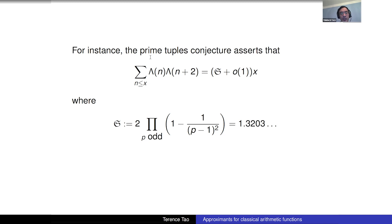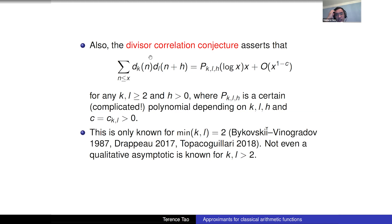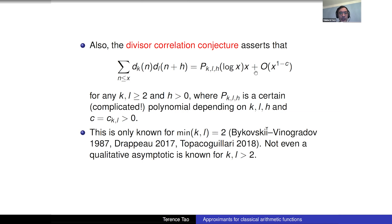For divisor functions there are also conjectures about correlations. While summing a single divisor function is classical, even pair correlations are conjectural: the sum of d_k(n)·d_l(n+h) should equal x times a certain polynomial in log x plus a lower order term with some power saving. This is known when one of k or l equals 2, but when both k and l are 3, nothing asymptotic is known.